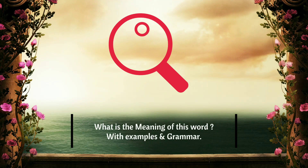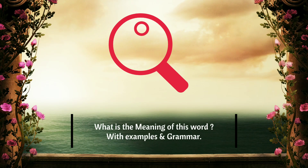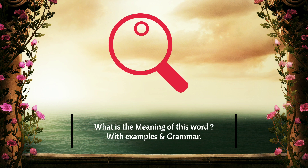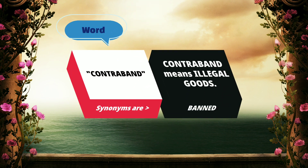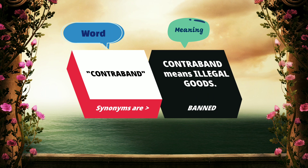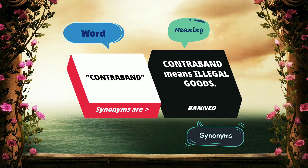Dear sisters and brothers of my YouTube family, today we're going to look at the meaning of this word and an example with grammar. The word is contraband. Contraband means illegal goods.